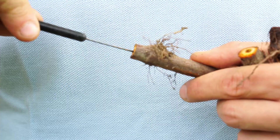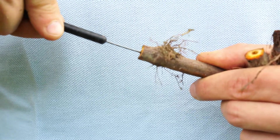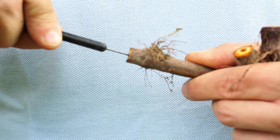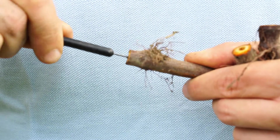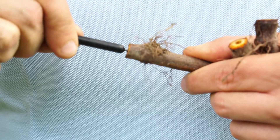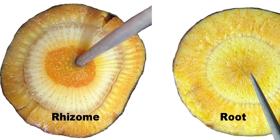The central part of rhizomes consists of soft tissue which is easy to penetrate, whereas roots possess a harder and uniformly woody texture.